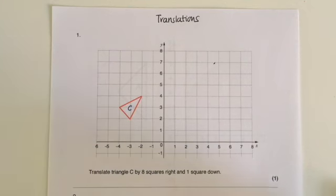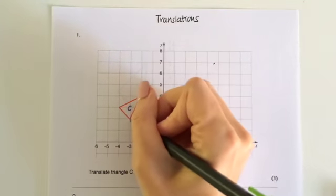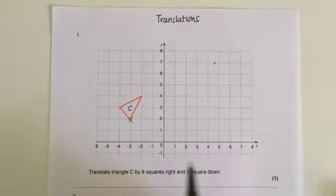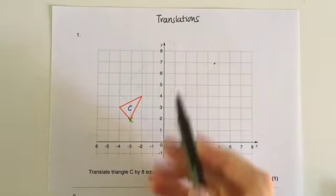So what I'm going to do is I'm going to choose one corner, so I'm going to choose this corner here, and I'm going to move it eight squares right and one square down.